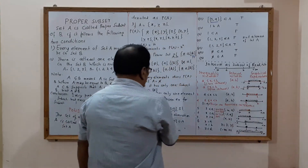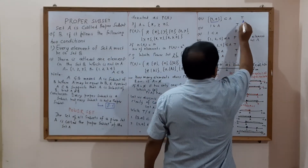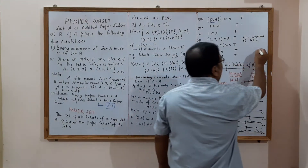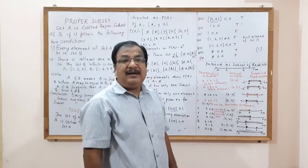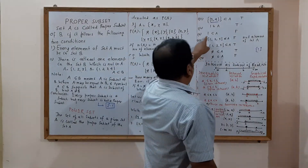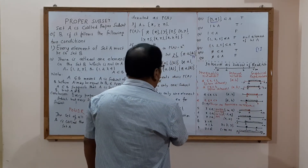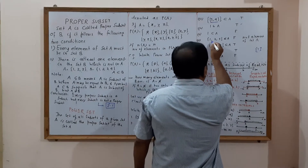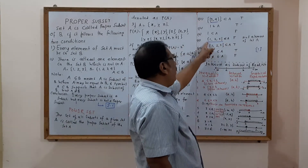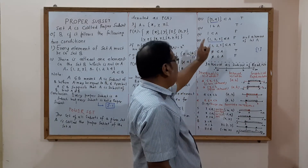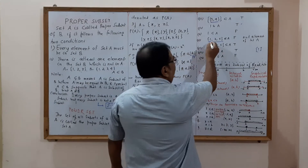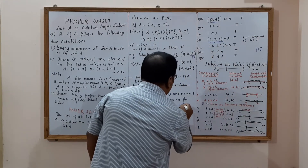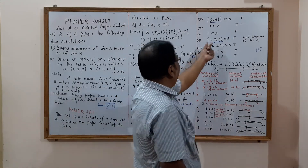Fourth: does 1 belong to A? True, because 1 is an element of A. Fifth: is 1 a subset of A? No. 1 is not a subset of A; 1 belongs to A. Had {1} been given, it would have been a subset of A. Sixth: does {1, 2, 5} belong to A? False, because 1, 2, 5 are acting individually, not as a combined set element of A.